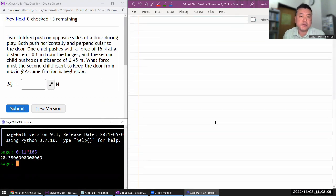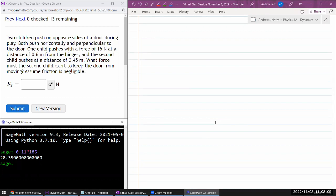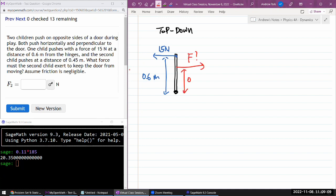It says, two children push on opposite sides of a door during play. I think I'm going to try to draw a top-down view. So here's a hinge. Imagine this is the door. They're saying they both push horizontally, so we don't have to worry about the dimension that's—all the motion is in this plane of view, in the top-down view. And perpendicular to the door, that makes things easier. So one child is pushing with that amount of force at distance 0.6 meters. And the other child is pushing with—they don't tell us the amount of force, but they tell us the distance. 0.45 meters.